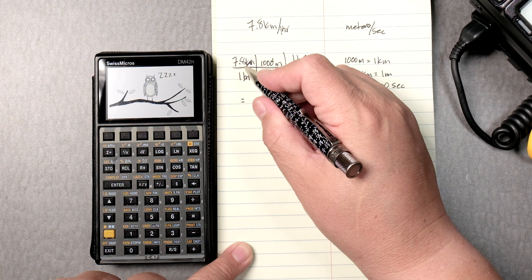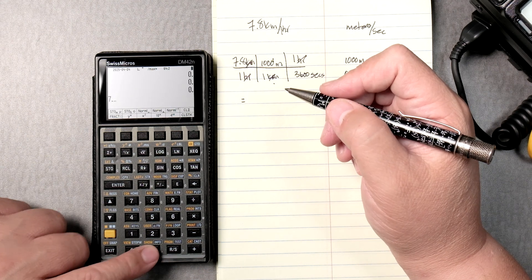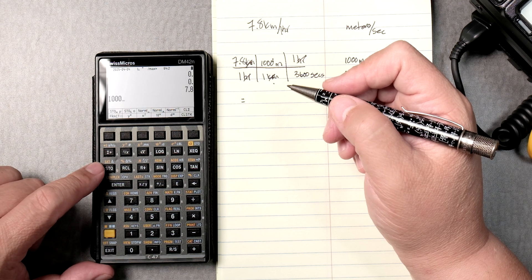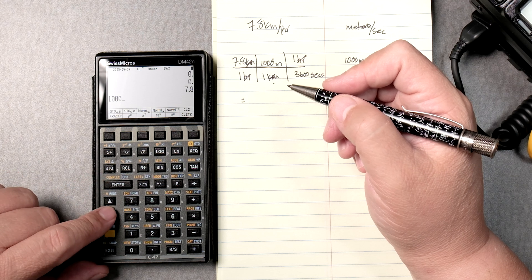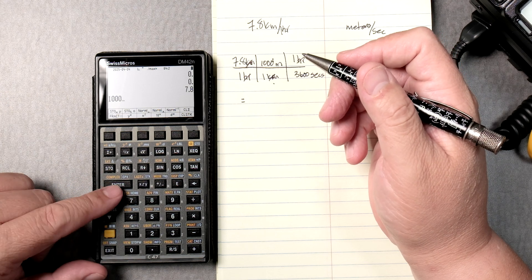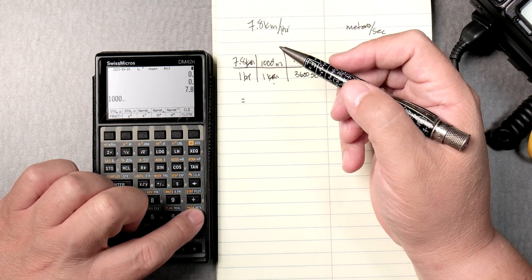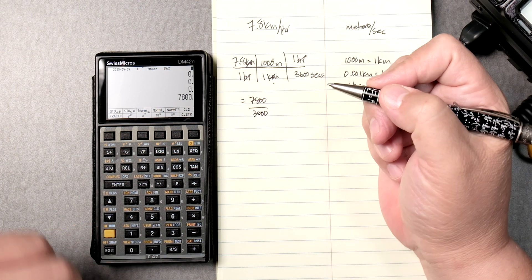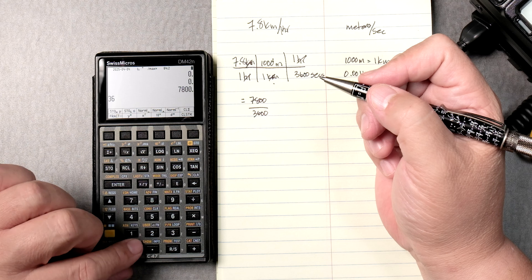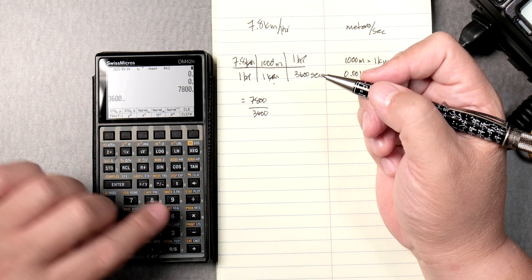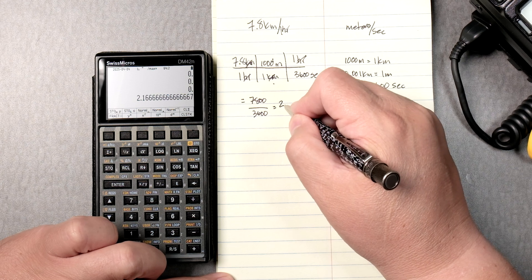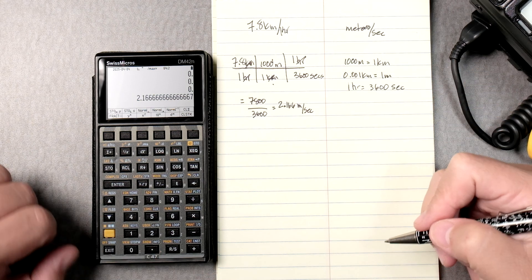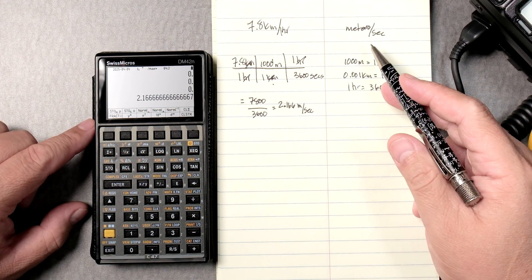So 7.8 times 1,000. 7.8 enter times 1,000. If you ever used an RPN calculator, it takes a little bit used to. You got to enter that number first and then multiply these two. Gives you 7,800 divided by 3,600. So we take 3,600. We don't need to enter it. We can just leave it in the stack and then divide. That gives you 2.166 meters per second. That gives you what you need for the conversion.